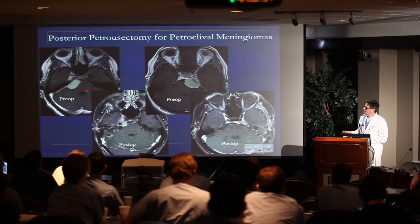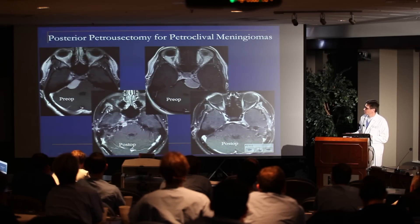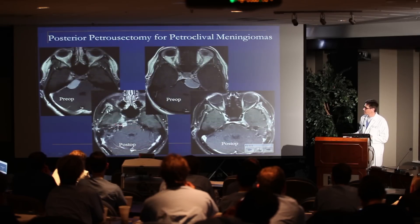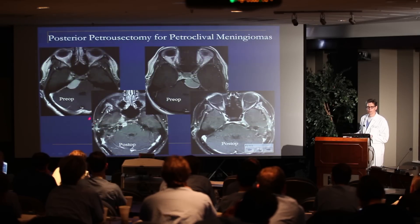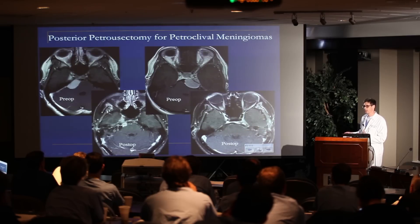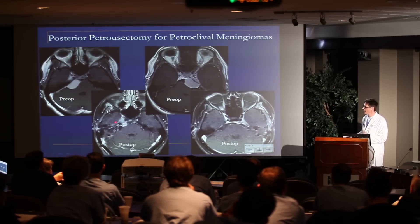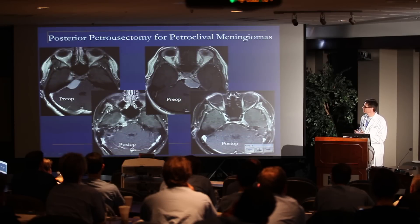So this was one I did through a posterior petrosectomy — but look, why did I leave that tumor there? What was in the way that prevented me from doing a better job? The fifth nerve — the fifth nerve was on the wrong side of this tumor, and I didn't want to damage the fifth nerve anymore.